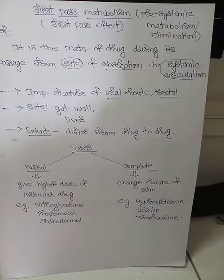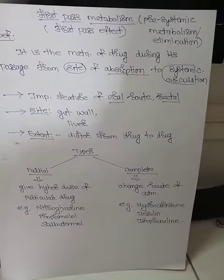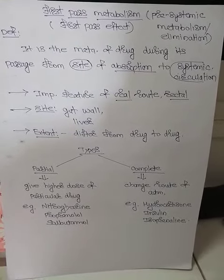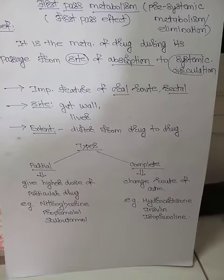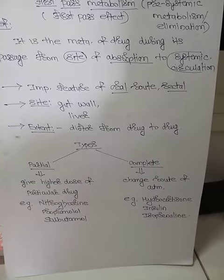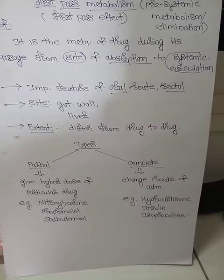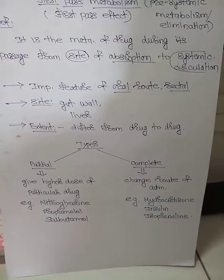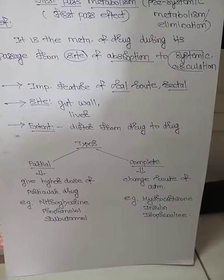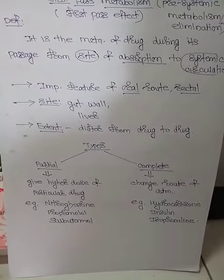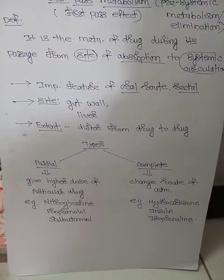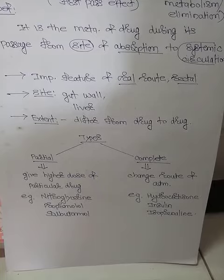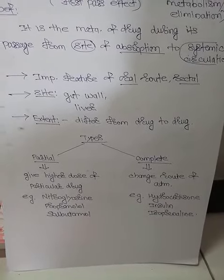There are two types of first pass metabolism. In partial first pass metabolism, the inactivation of the drug is partial, so you have to give a higher dose of the particular drug to increase its bioavailability, since most of the drug gets inactivated. Examples include nitroglycerin, propranolol, and salbutamol. Increasing the dose of these drugs will increase their bioavailability.